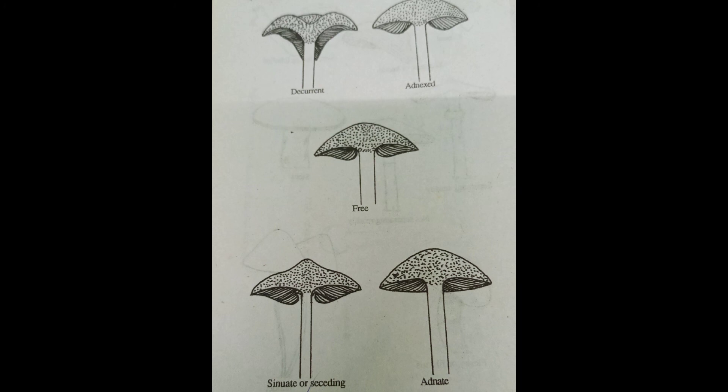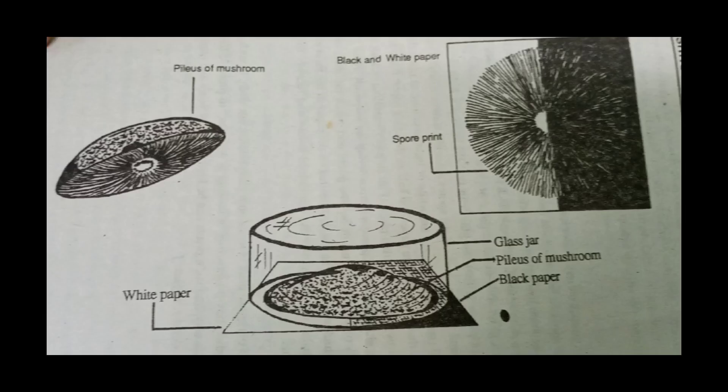When they are near the stripe in a deep notch, they are termed as sinuate. The morphological character of spores for identification of mushroom can be carried out through a spore print.